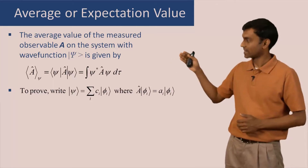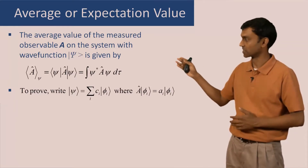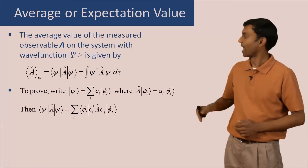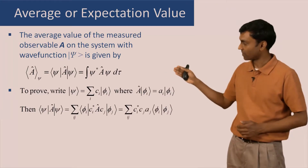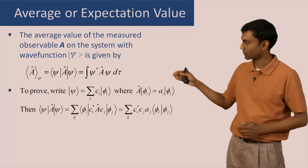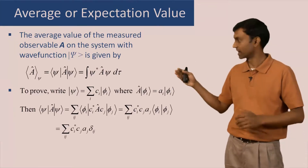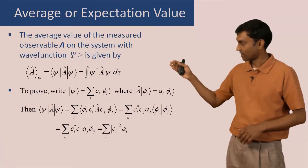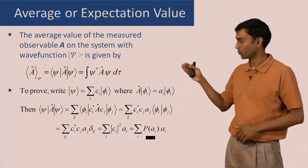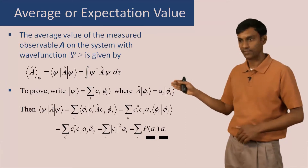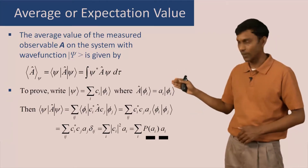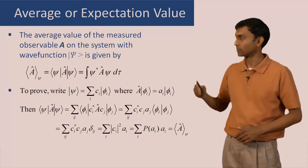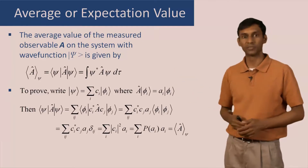We start by writing psi as a linear combination of the phi_i's with coefficients C_i, then plug that into the expression psi|A|psi. The operator A operates on the eigenfunction to give eigenvalue A_j, and we are left with the integral phi_i|phi_j, which is the Kronecker delta — equal to 1 when i equals j and 0 otherwise. The right-hand side then becomes the sum of the probability of obtaining eigenvalue A_i multiplied by A_i itself — a weighted average of the A_i values, which is the average value of the observable.